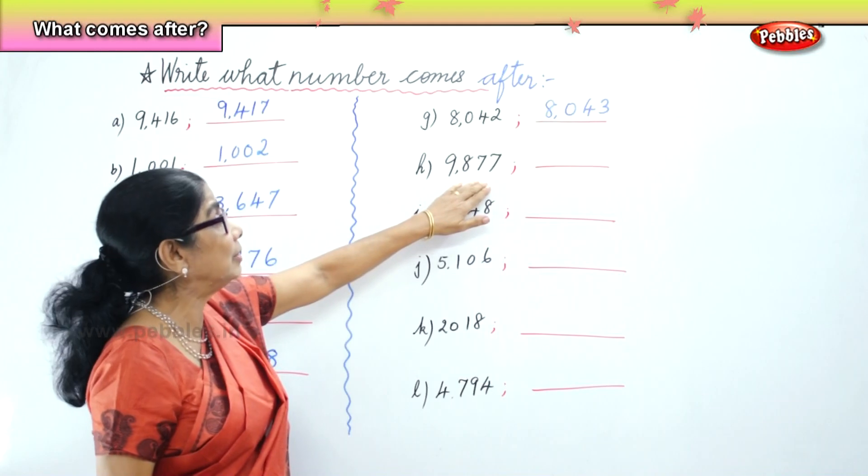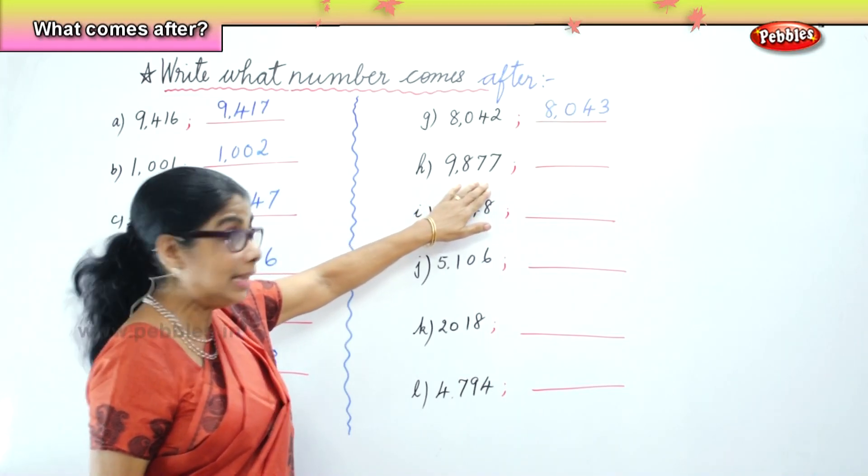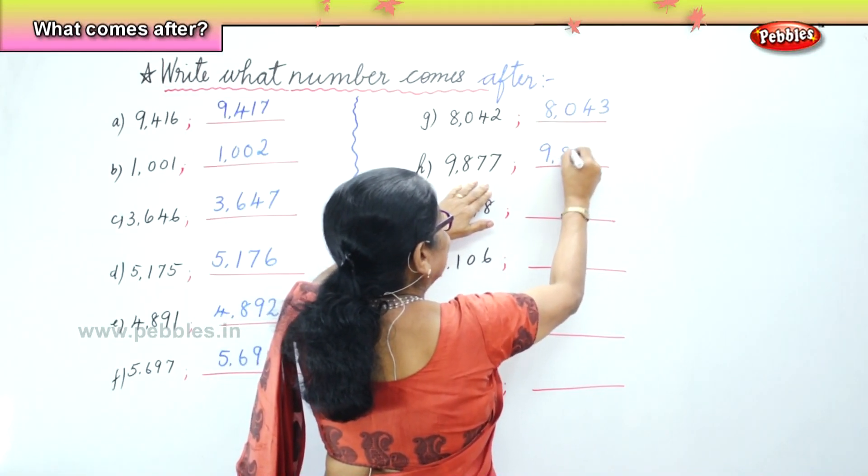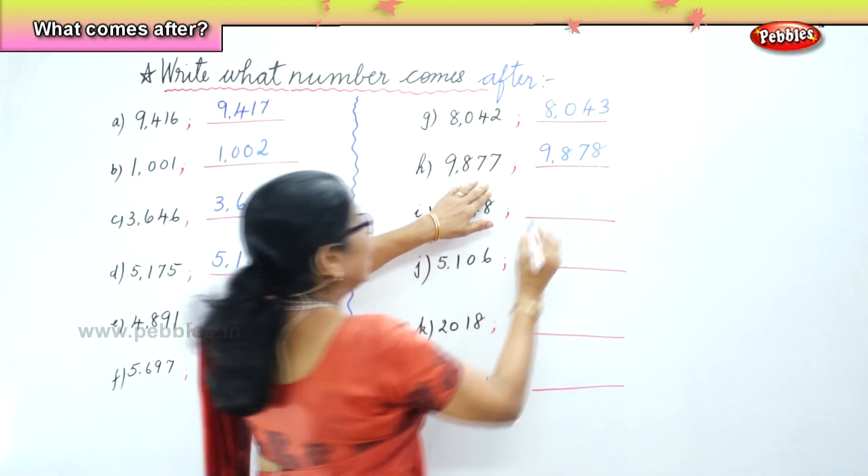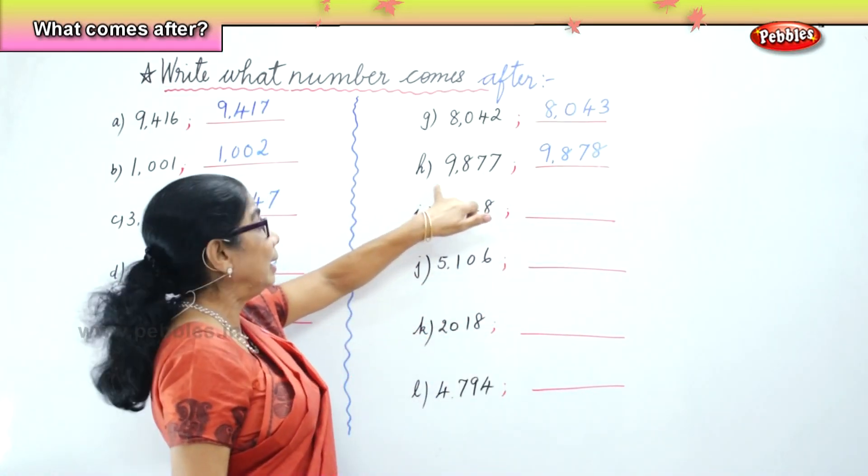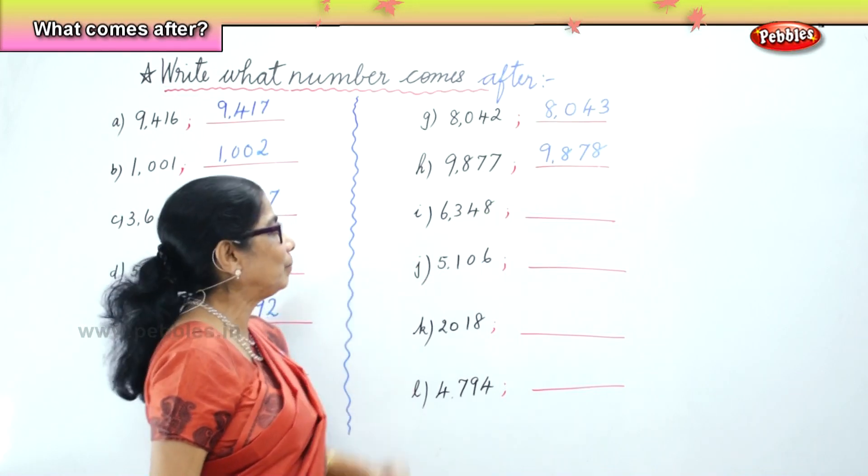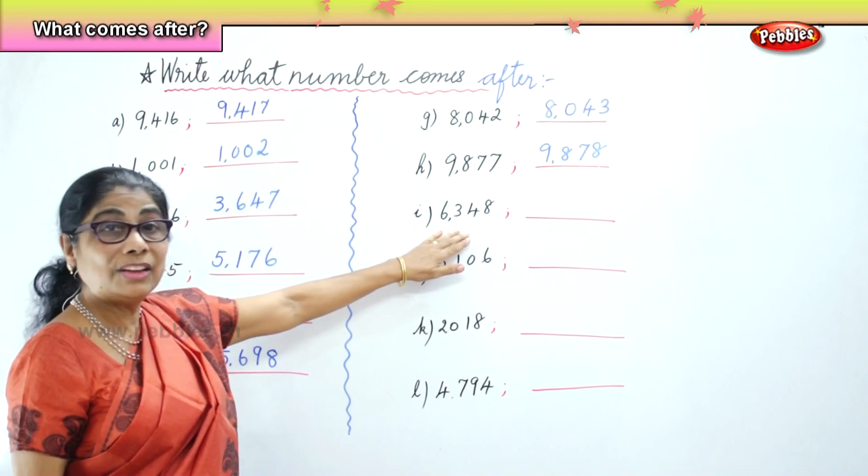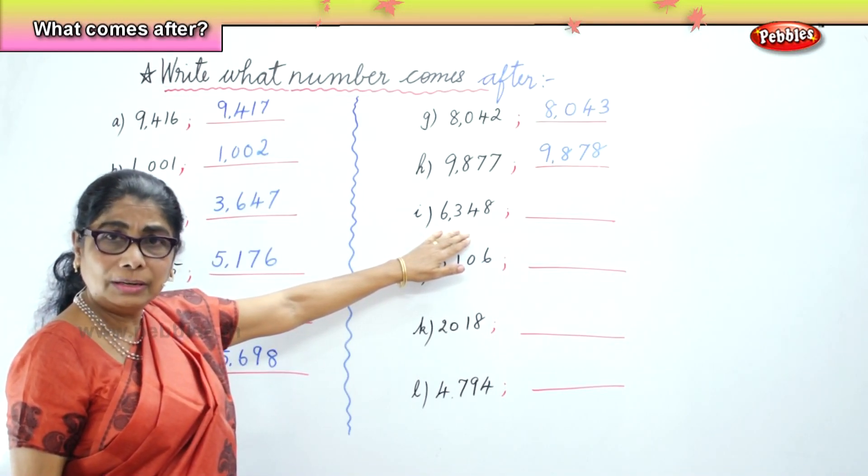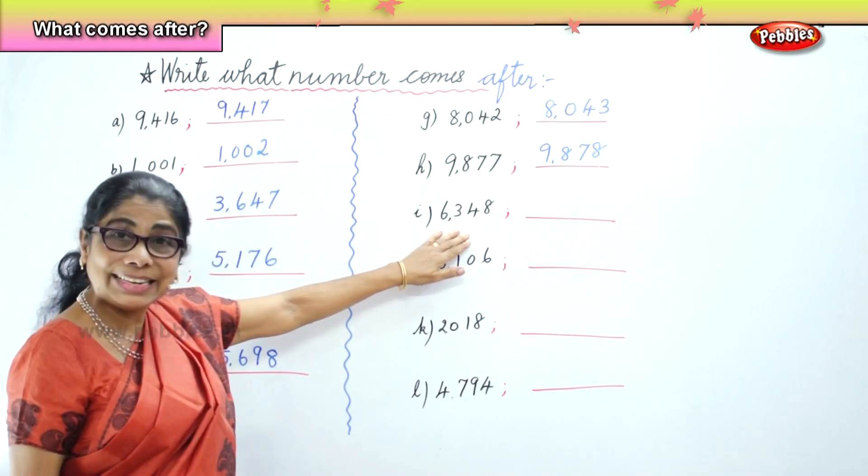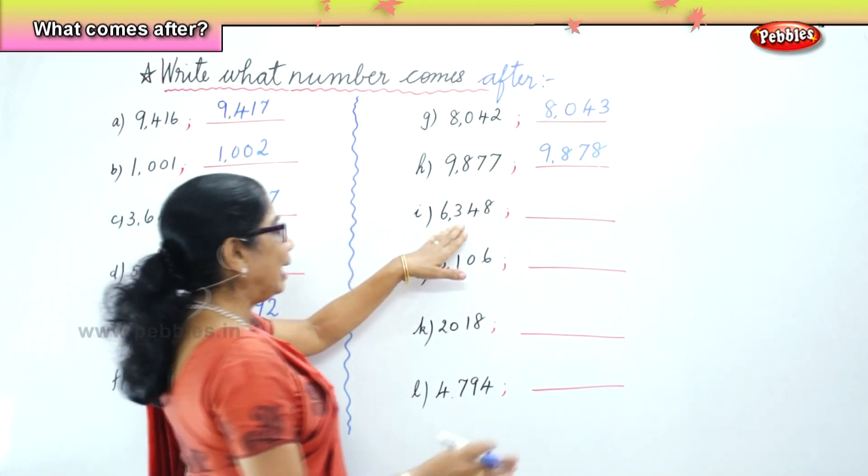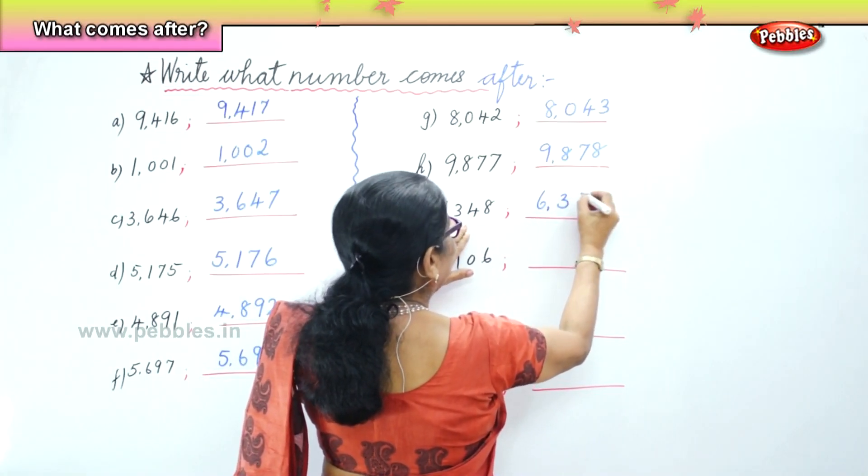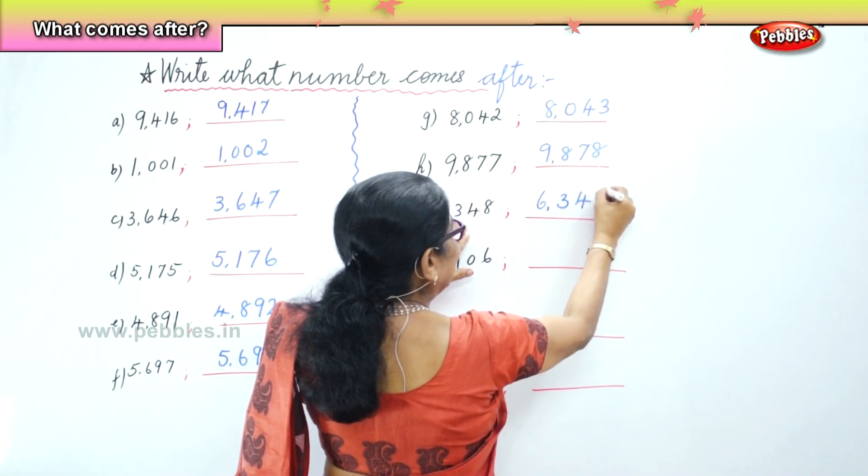9,877. What number comes after that? 9,878. So you get 9,878 comes after 9,877. Okay. You have another number here. 6,348. What's the number that comes after? 48, 49. So you get 6,349. Very good.